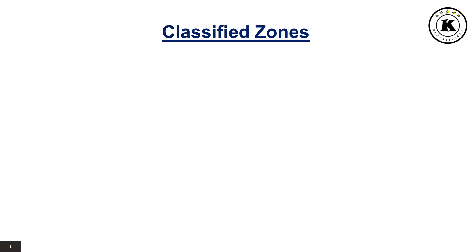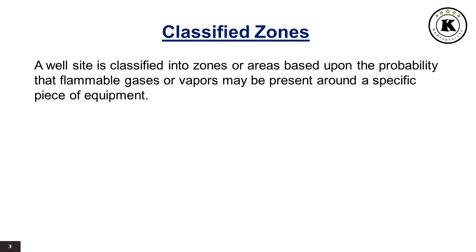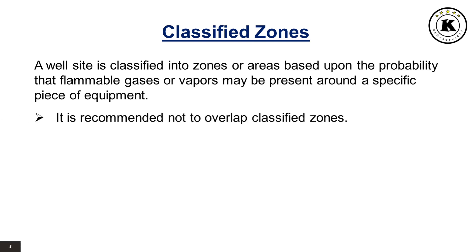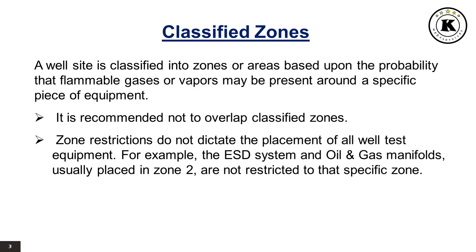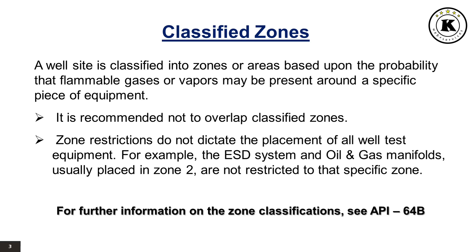A well site is classified into zones or areas based upon the probability that flammable gases or vapors may be present around a specific piece of equipment. It is recommended not to overlap classified zones. Zone restrictions do not dictate the placement of all well test equipment. For example, the ESD system and oil and gas manifolds, usually placed in Zone 2, are not restricted to that specific zone. For further information on zone classifications, see API 64B.